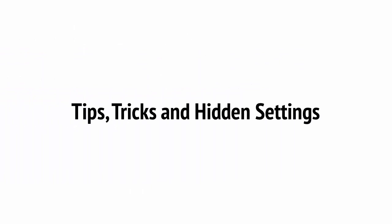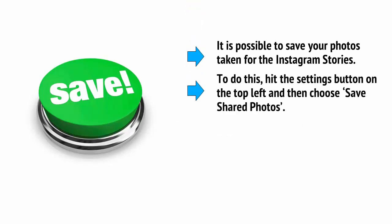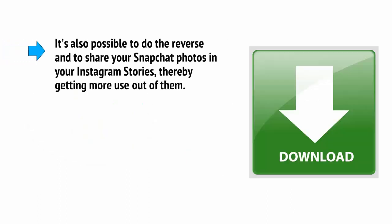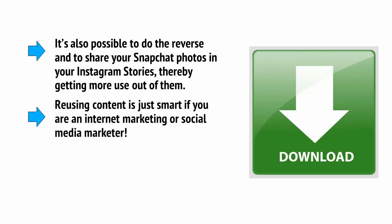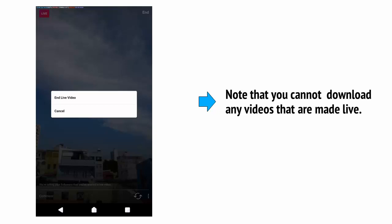There are a few more tips, tricks, and hidden settings that won't immediately be apparent when you first start to use these new features. For starters, it is possible to save your photos taken for Instagram Stories. To do this, hit the settings button on the top left and then choose save shared photos. This will share your photos to your device, which is handy because you can then make use of them elsewhere. It's also possible to share your Snapchat photos in your Instagram Stories, thereby getting more use out of them. Reusing content is just smart if you are an internet or social media marketer. To download Snapchat photos, all you need to do is click the download button. Note that you cannot, however, download any videos that are made live.